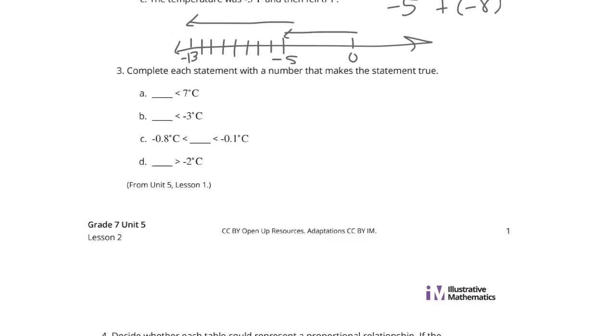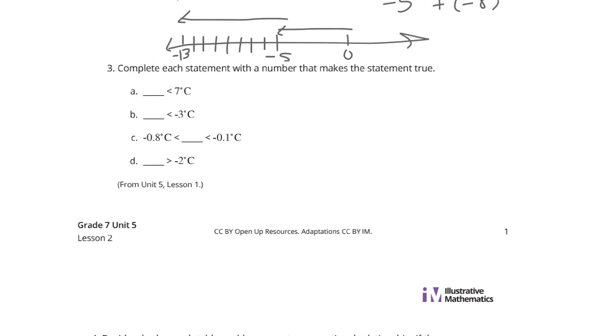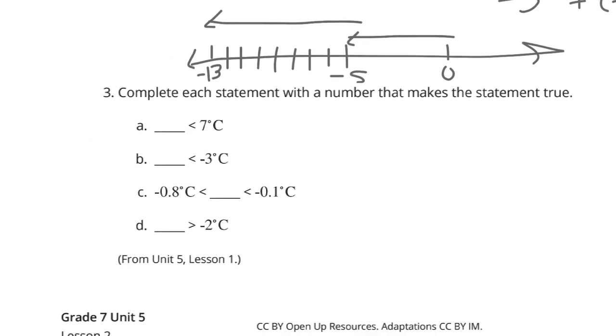Question 3. Complete each statement with a number that makes the statement true. I'm sure it's a review from our first lesson of the unit. Well, what number can be smaller than 7 degrees? Well, how about 0°C, I suppose. What number is smaller than -3°C? It's basically, well, -4°C is smaller.